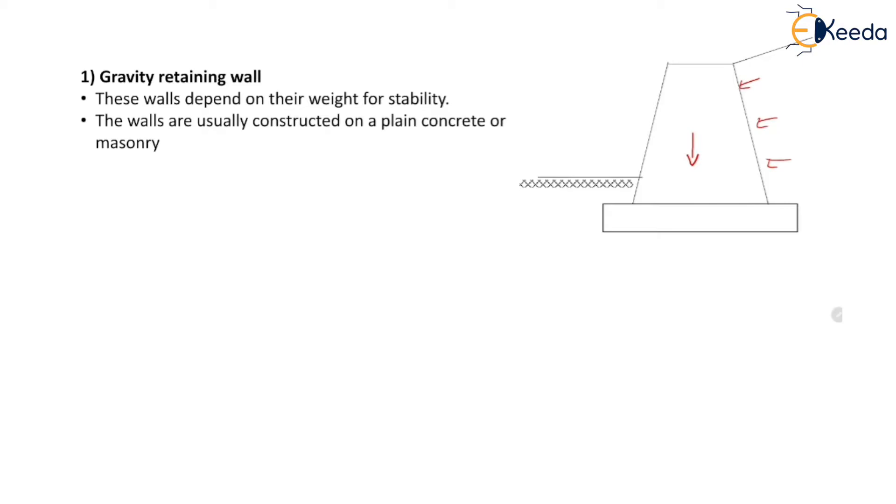These walls are usually constructed of plain concrete or masonry. Such walls are not economical for large height because if the height is large, the pressure exerted by the soil on the retaining wall will be large.